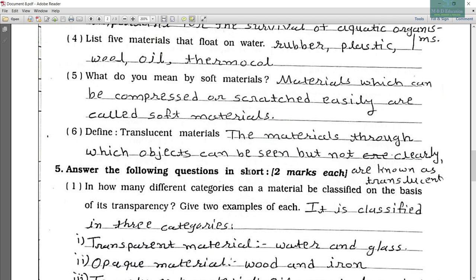Now the fourth one. List five materials that float on water. So rubber, plastic, wool, oil and thermocol.